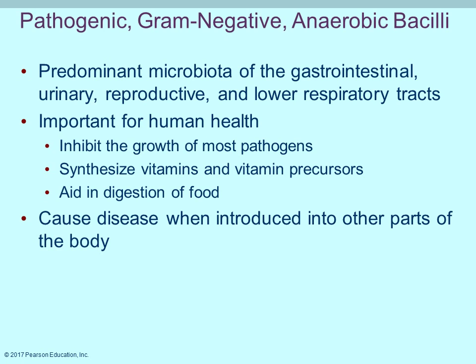Pathogenic gram-negative anaerobic bacilli are the predominant microorganisms found in the GI tract. Problems arise when they move to other areas — such as the upper respiratory tract or meninges. They are important and not entirely bad — they inhibit growth of other pathogens passing through the GI tract and in the reproductive tract. In the intestines they produce vitamins like vitamin K, produce vitamin precursors, and aid in digestion. They do a good job in their proper location; it is only when placed in the wrong location that they cause disease.